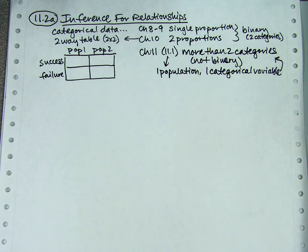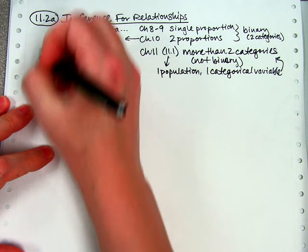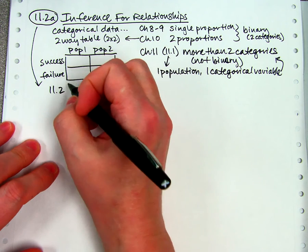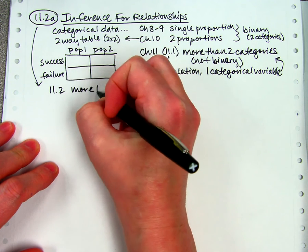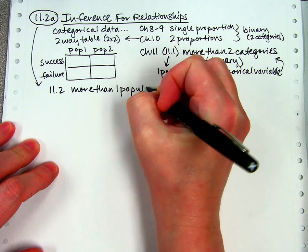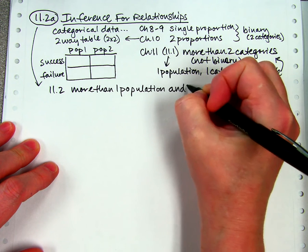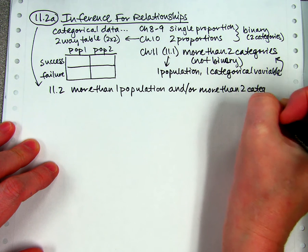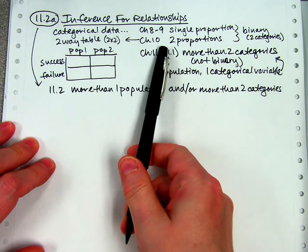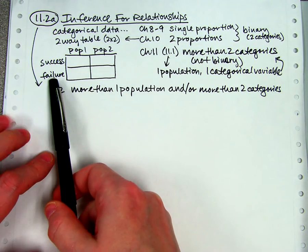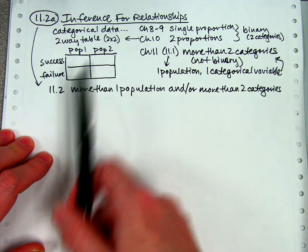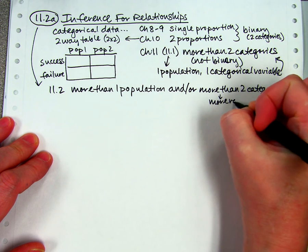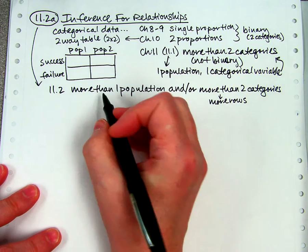Have you guessed where we're going in 11-2? I kind of implied it a second ago. So here's where we're going with the new lesson. That's all the old stuff. In 11-2, we're going to have more than one population. Oh, my goodness. And or more than two categories. We've actually already seen the two population thing in chapter 10, where we had two populations and successes and failures. In 11, we could have two populations and more categories. So we could just add more rows to this table.